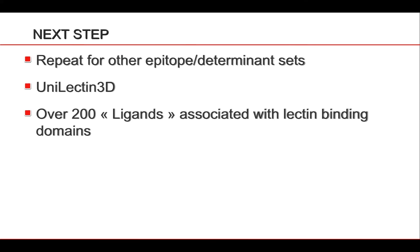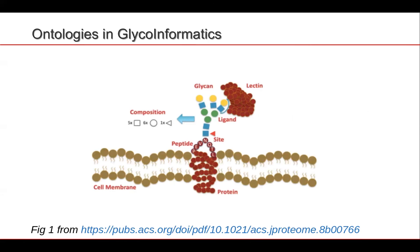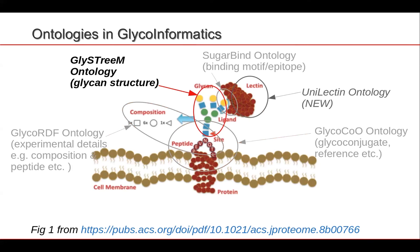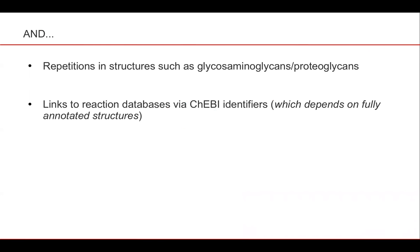The next steps are to repeat this for other epitope sets, including UniLectin-3D which has over 200 ligands associated with it. Another strong reason for this approach is that in glycoinformatics there are a number of different ontologies: GlycoRDF describing experimental conditions, the GlycO-core ontology on which GlyConnect is based, and the SugarBind ontology. Using all of these ontologies we can speak between them, allowing linkages across various datasets and databases. We're also going to include repetitions to bring in structures such as GAGs (glycosaminoglycans) and linked reaction databases via KEGG identifiers.